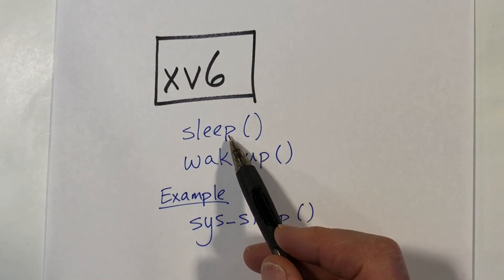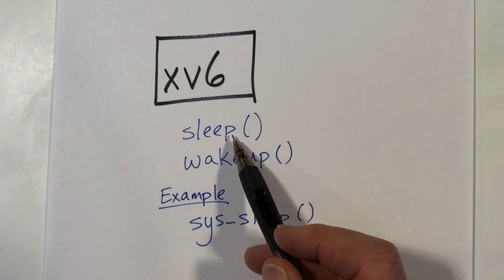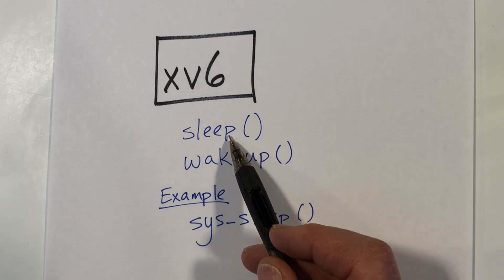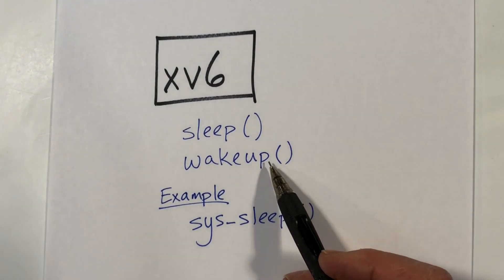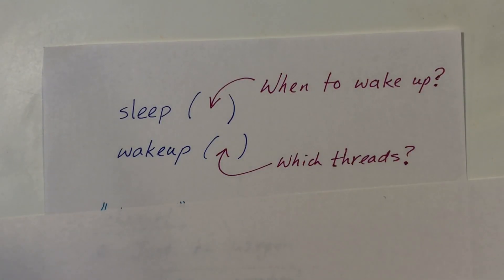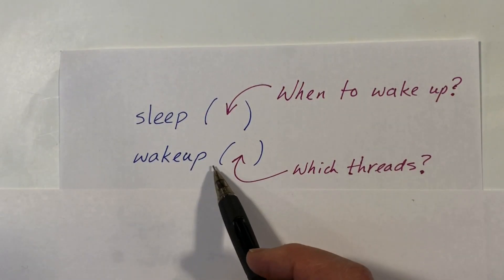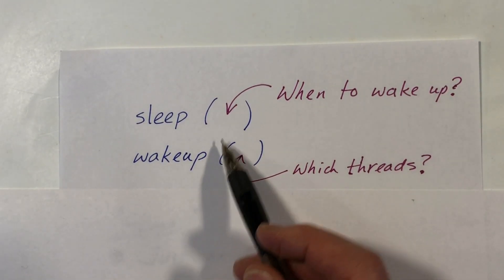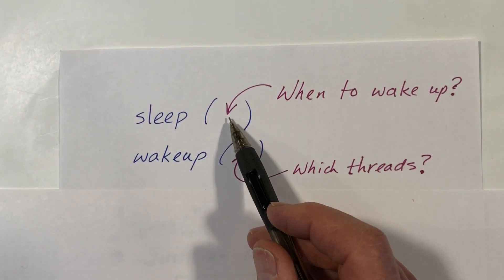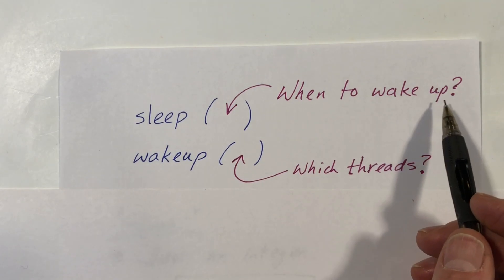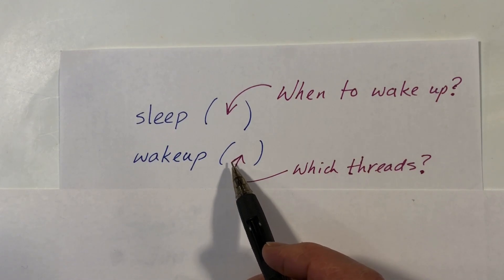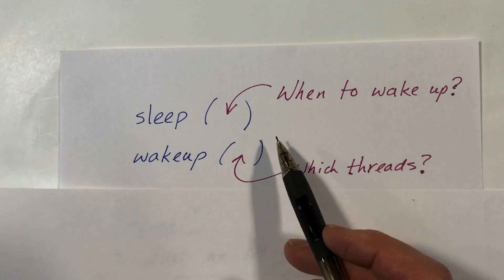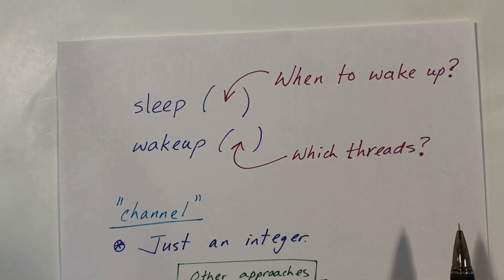Any process can call sleep to put itself to sleep, and that will end the current time slice and change its status from running or runnable to a status of sleeping. The process will then remain sleeping until some other process calls wakeup. So we have the problem of exactly which process is to wake up when some process calls wakeup. When we go to sleep, we need to provide some information about when we want to be woken up, and wakeup should only wake up a certain subset of sleeping processes.